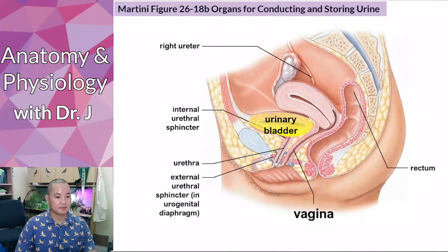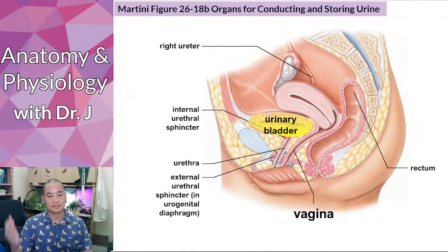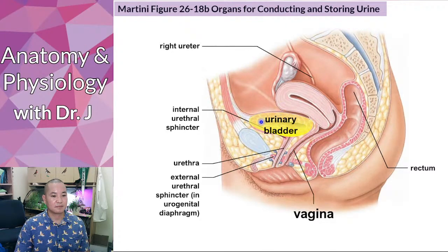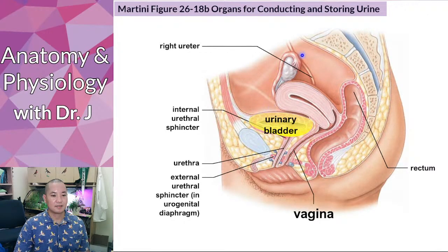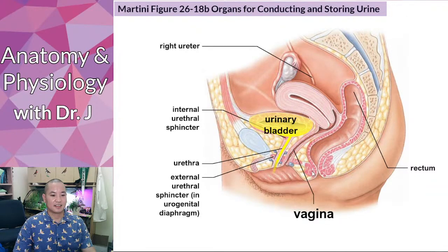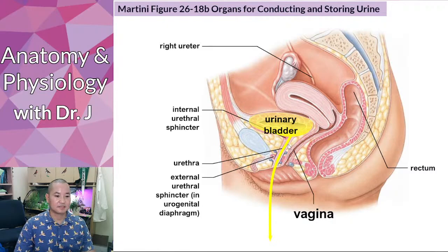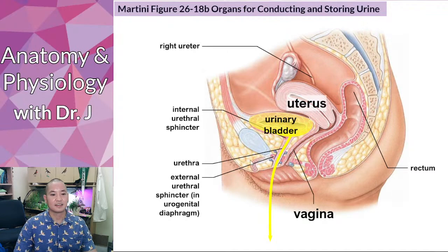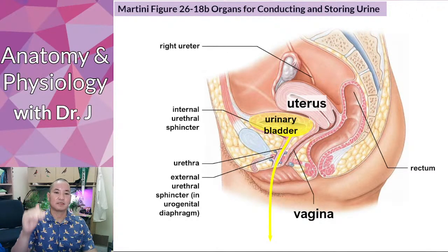In the sagittal cross-section view, we have the urinary bladder, which is the most forward structure. Behind it we have the uterus, and then the rectum. The urethra carries urine from the bladder toward the outside, and the uterus sits behind and on top of the bladder.